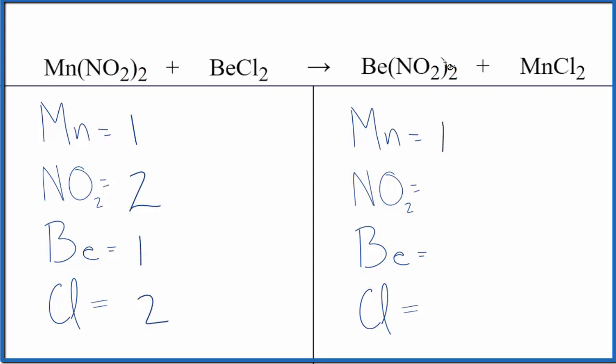Product side, we have the one manganese, two of these nitrite ions here, one beryllium and then two chlorines. So it looks like it's almost balanced. In fact, it is balanced. It's an already balanced equation.